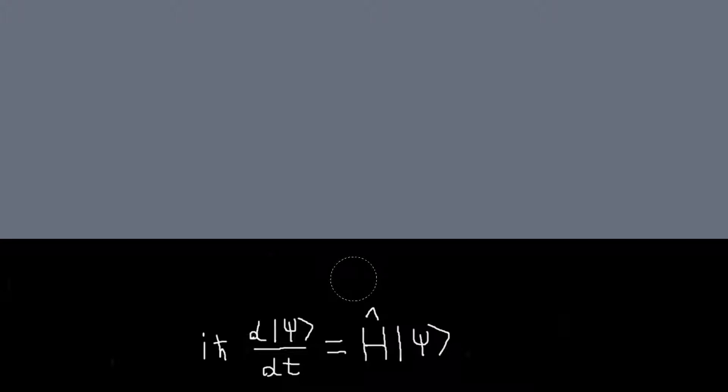We know how to write down the Hamiltonian for a classical system in general. It's just the kinetic energy plus the potential energy. And so we'll do that, and then basically from that expression, the classical expression, try and figure out the quantum mechanical expression for the Hamiltonian. So maybe that's confusing, but I'm about to work out a specific example here.